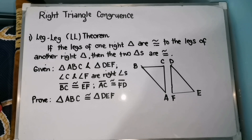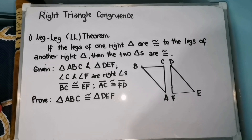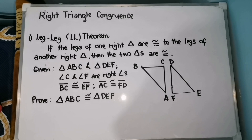Right triangles are special because they have right angles, and right angles are congruent. You will look at shortcuts for proving congruence between right triangles. We are going to apply deductive skills to show congruence. We have the LL congruence or the Leg-Leg congruence, the LA congruence, the HA congruence, and the HL congruence.